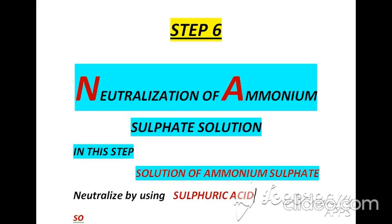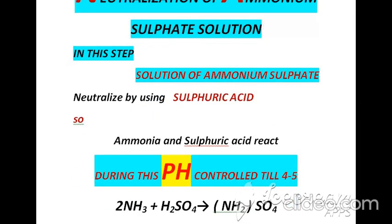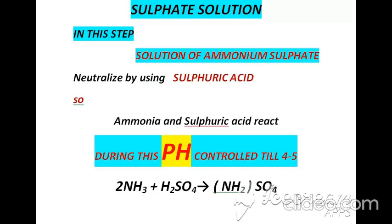According to step six, which is neutralization of ammonium sulphate solution, we neutralize the ammonium sulphate solution obtained from filtration. One percent ammonia is present in the solution from the filtration step, so we neutralize it with sulphuric acid. Free ammonia gas and sulphuric acid react, producing ammonium sulphate. During this neutralization process, pH must be controlled between 4 and 5.